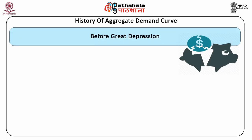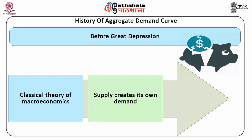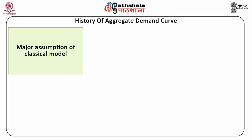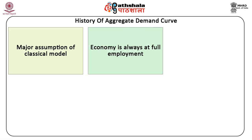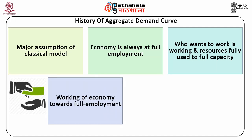Before the Great Depression of the 1930s, economists believed in the validity of classical theory of macroeconomics — supply creates its own demand. Supply was adjustable to changes in the economy. The major assumption of the classical model is that the economy is always at full employment, meaning that everyone who wants to work is working and all resources are being fully used to their full capacity. The mechanism behind the economy working towards full employment was an invisible hand.